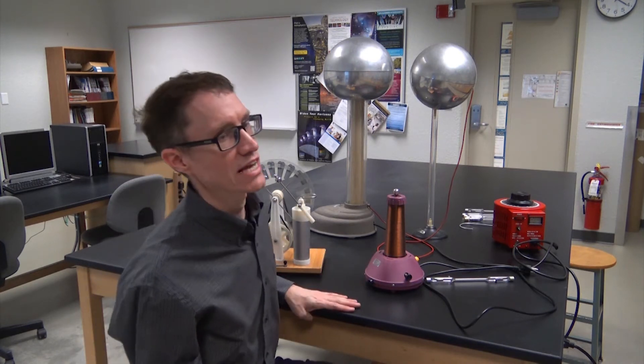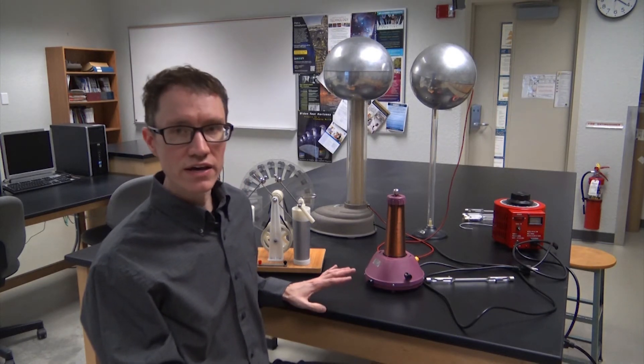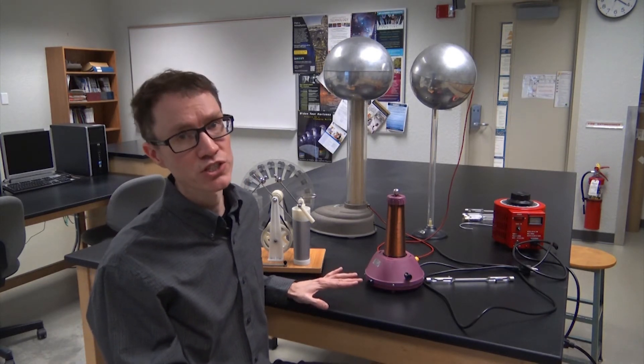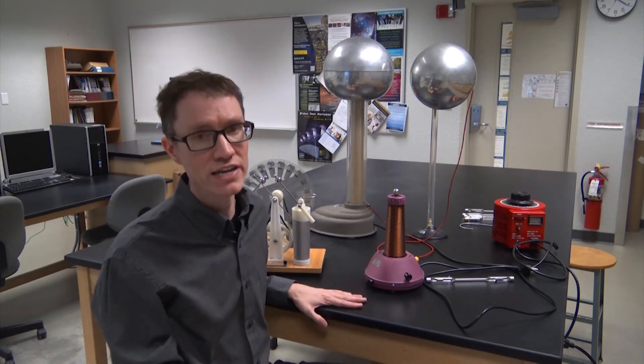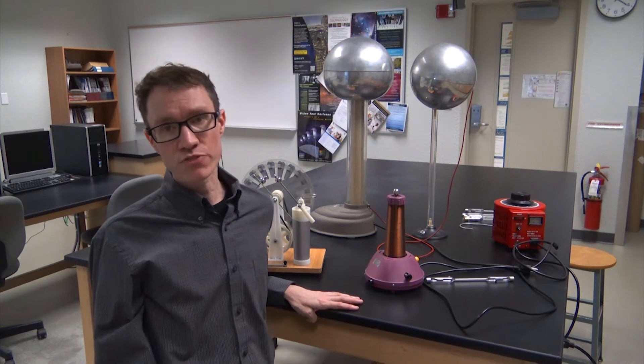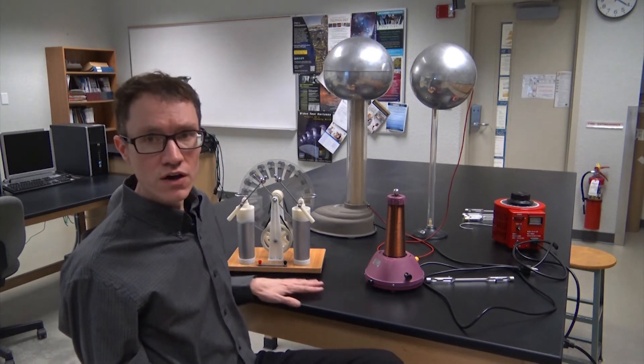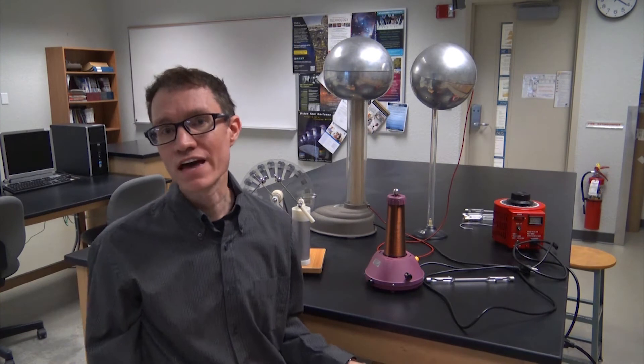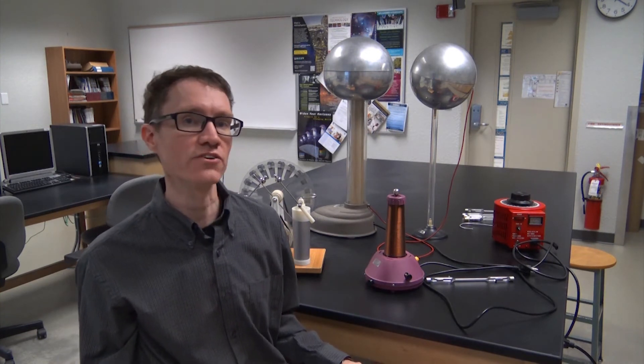Sitting behind me on this table are three different instruments. Each of these machines is capable of generating a very high voltage, high enough to break down air and hopefully make some sparks. We've got three tools: the Tesla coil, the Wimshurst generator, and in the back we have the Van de Graaff generator with the two large electrodes.